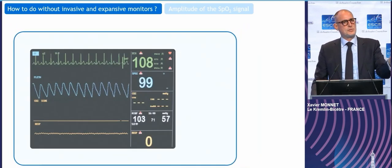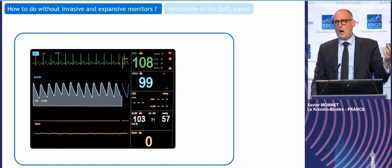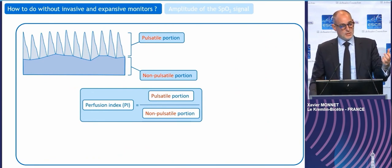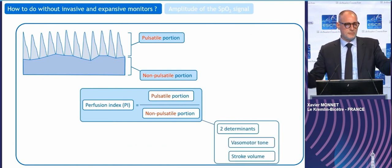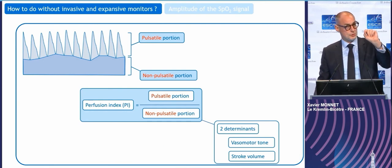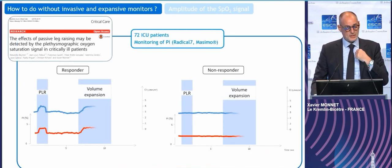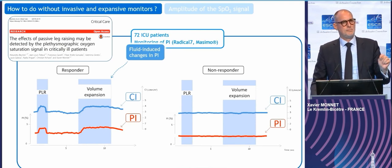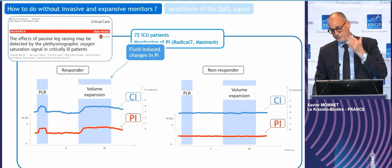This may also apply to changes in the amplitude of the SpO2 signal. The SpO2 waveform is made of two parts: a pulsatile part you see, and a non-pulsatile portion you don't see. Some devices measure this perfusion index, which many consider a quality index of SpO2. It's determined by vascular tone and also by stroke volume. Changes in cardiac index during passive leg raising and fluid bolus infusion were pretty well followed by changes in this simple perfusion index. We need more studies, as the signal is unstable in some patients, but if confirmed, this would be a useful non-invasive tool.